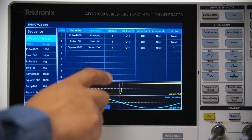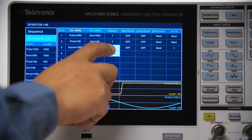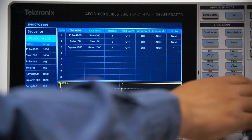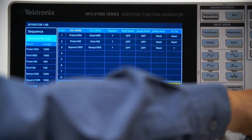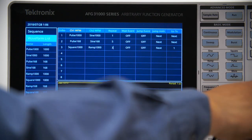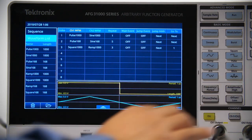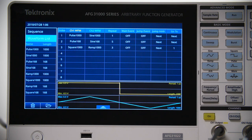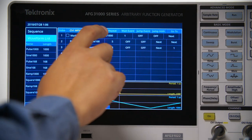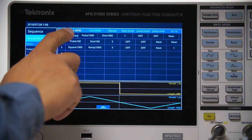You can easily change the amount of times the waveforms are repeated by simply allocating the desired amount in the Repeat column. Leave the repeat number of entry 1 as 1 and add a marker for this entry to trigger the scope. You do this with a simple right swipe, which will bring up the marker to check.